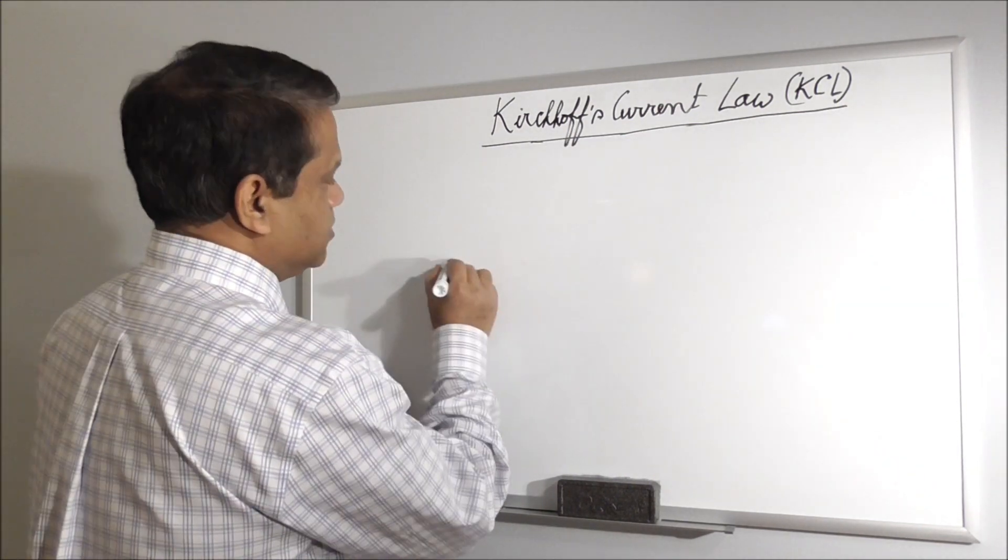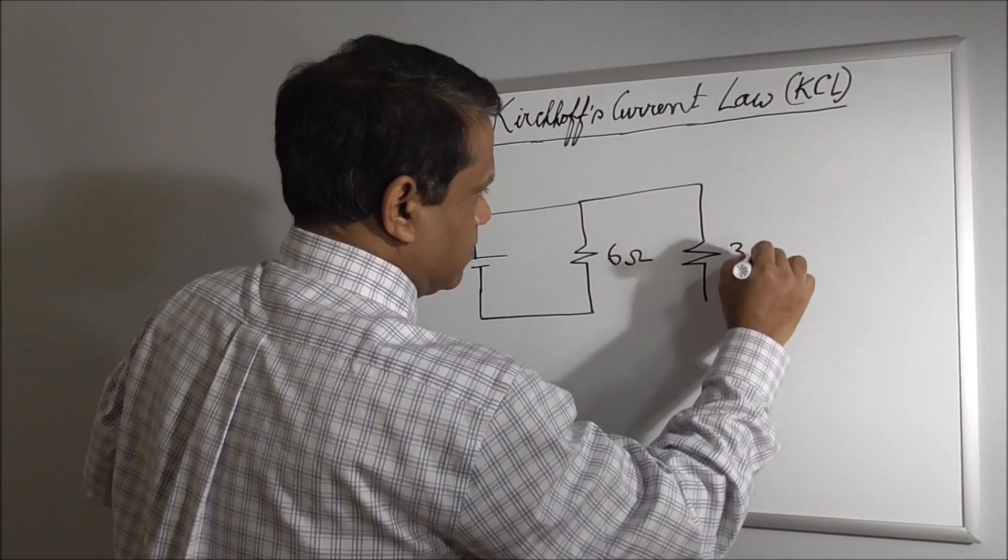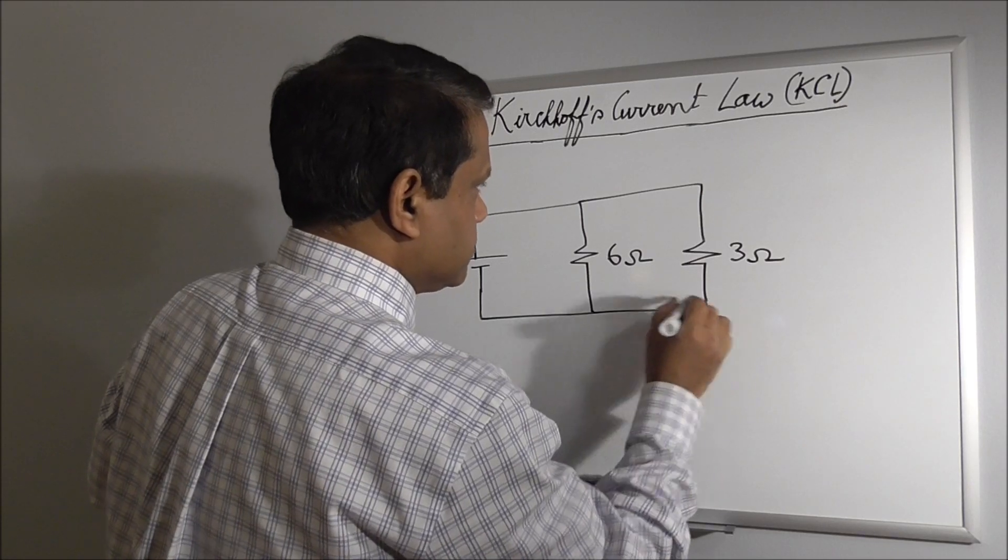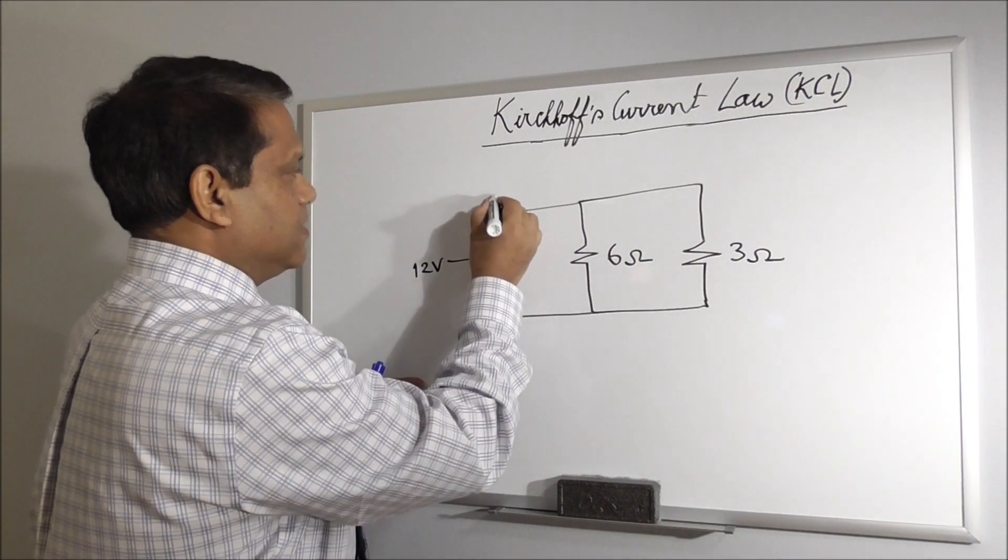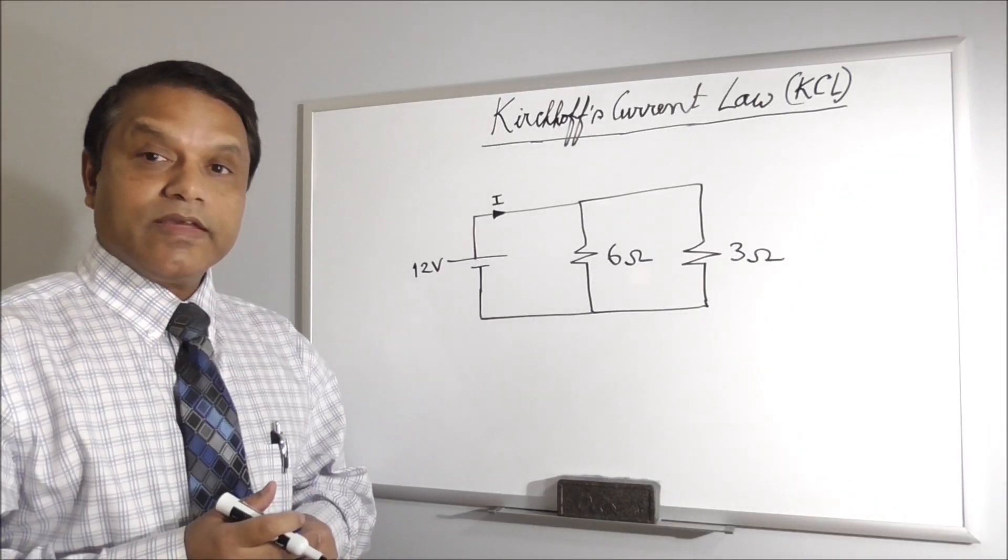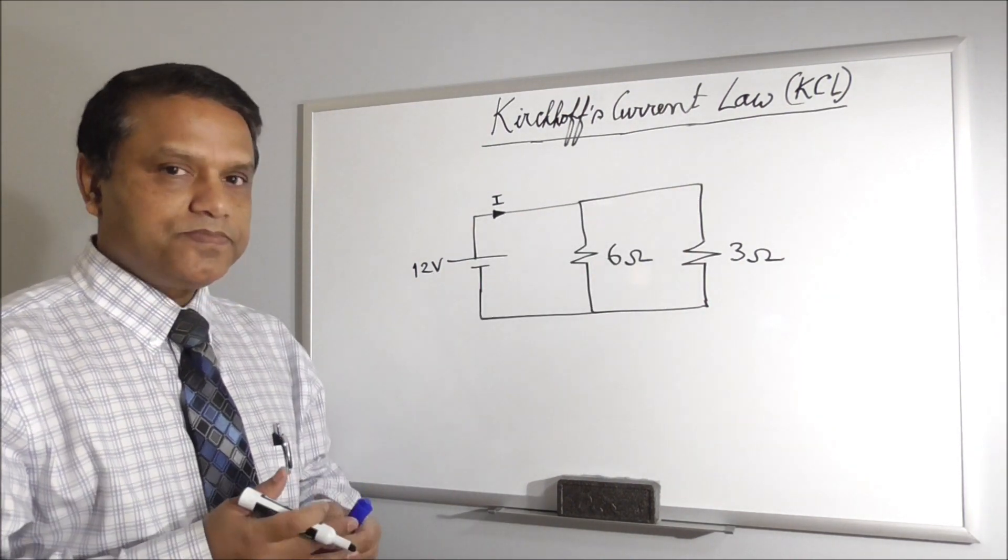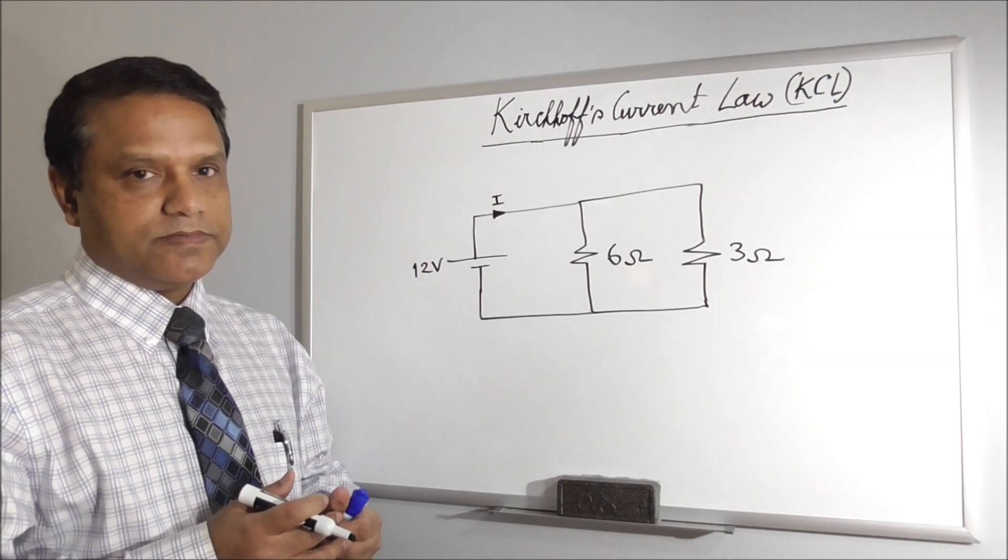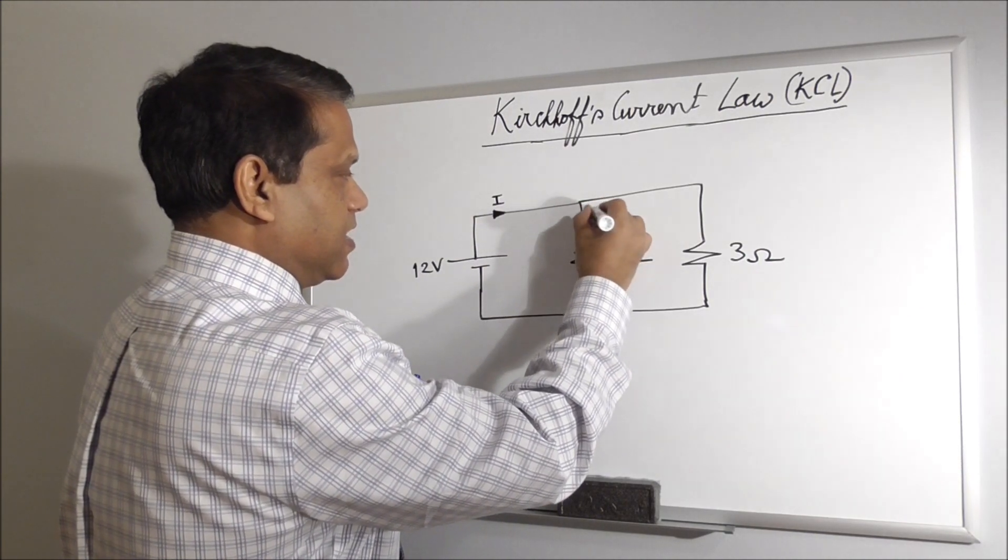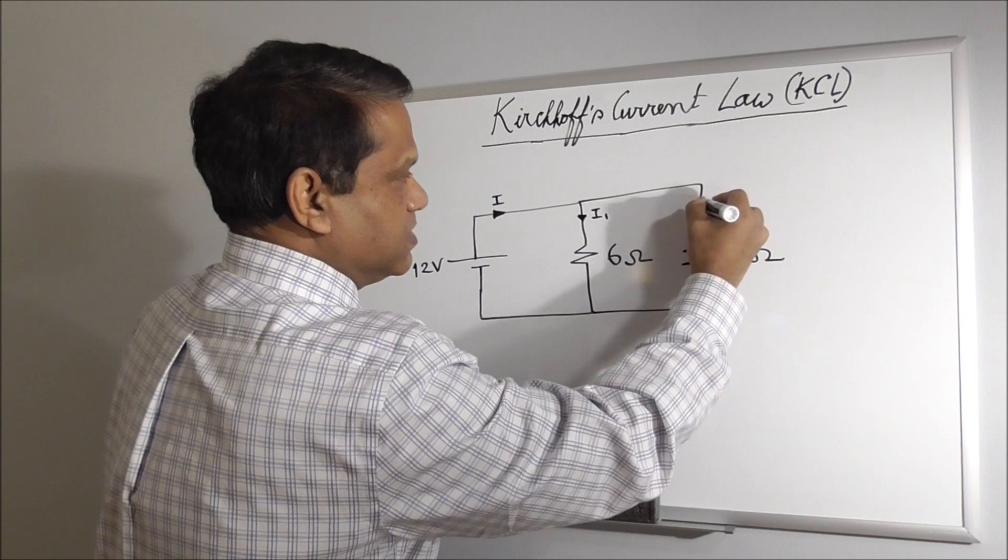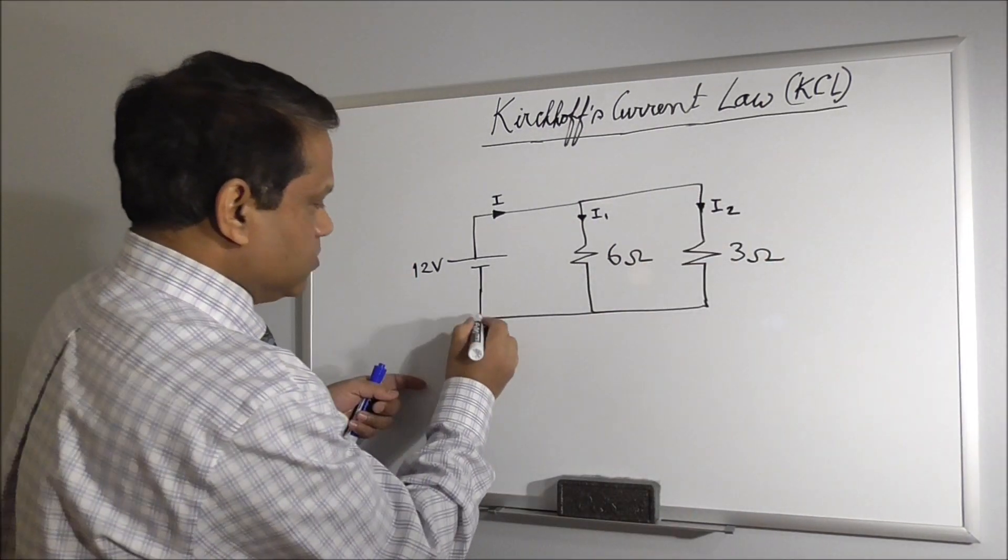Suppose you have a circuit like this, 12 volt battery, resistance 3 ohm. We have to find the current, source current I. First we will apply KVL to find these two branch currents and then we will use that information to find this current. Let's assume the current to these two branches is I1 and this branch is I2. And let's assume this is the ground node.